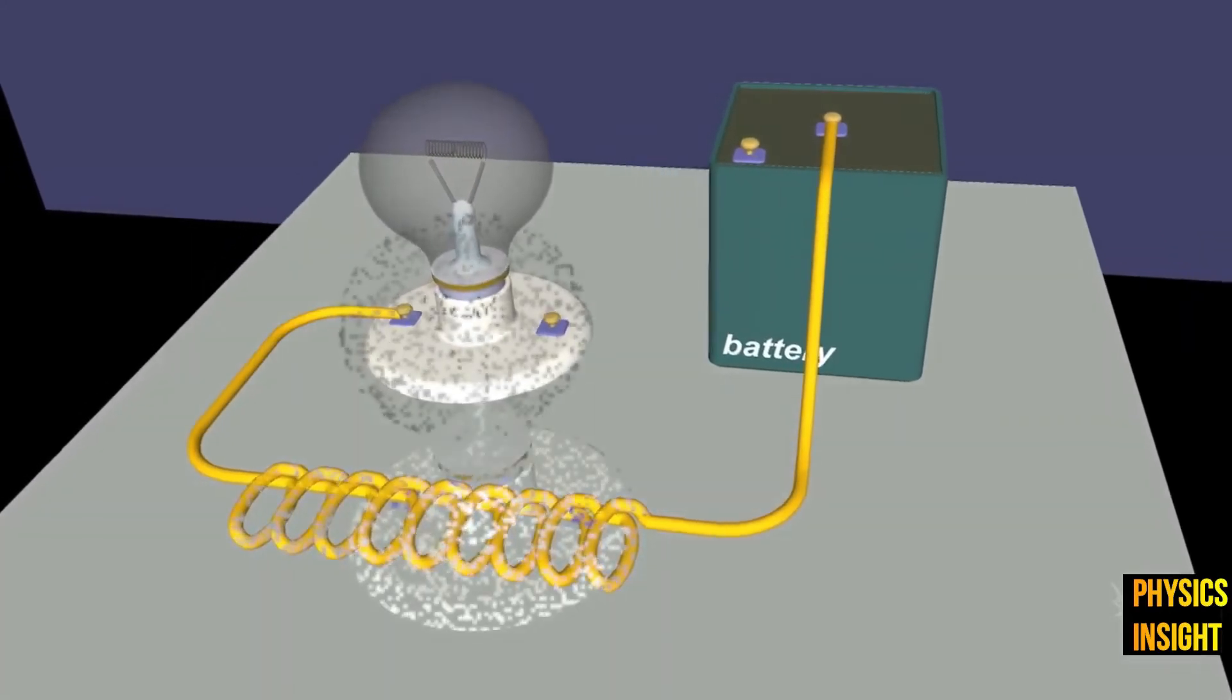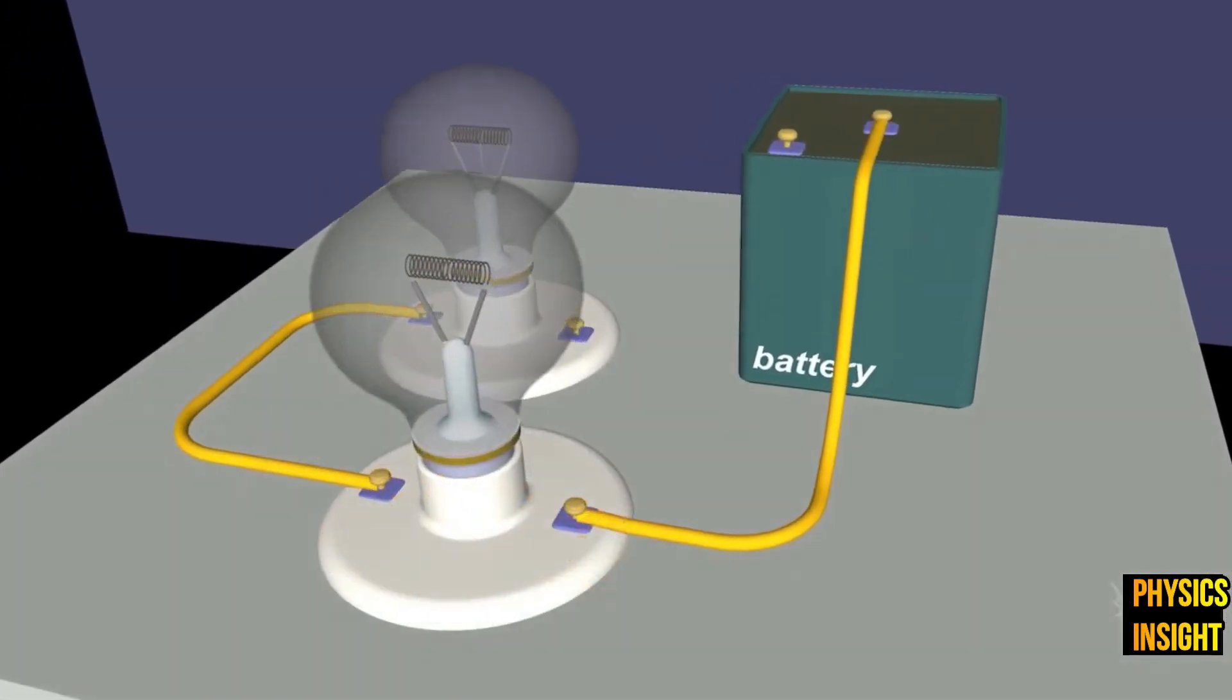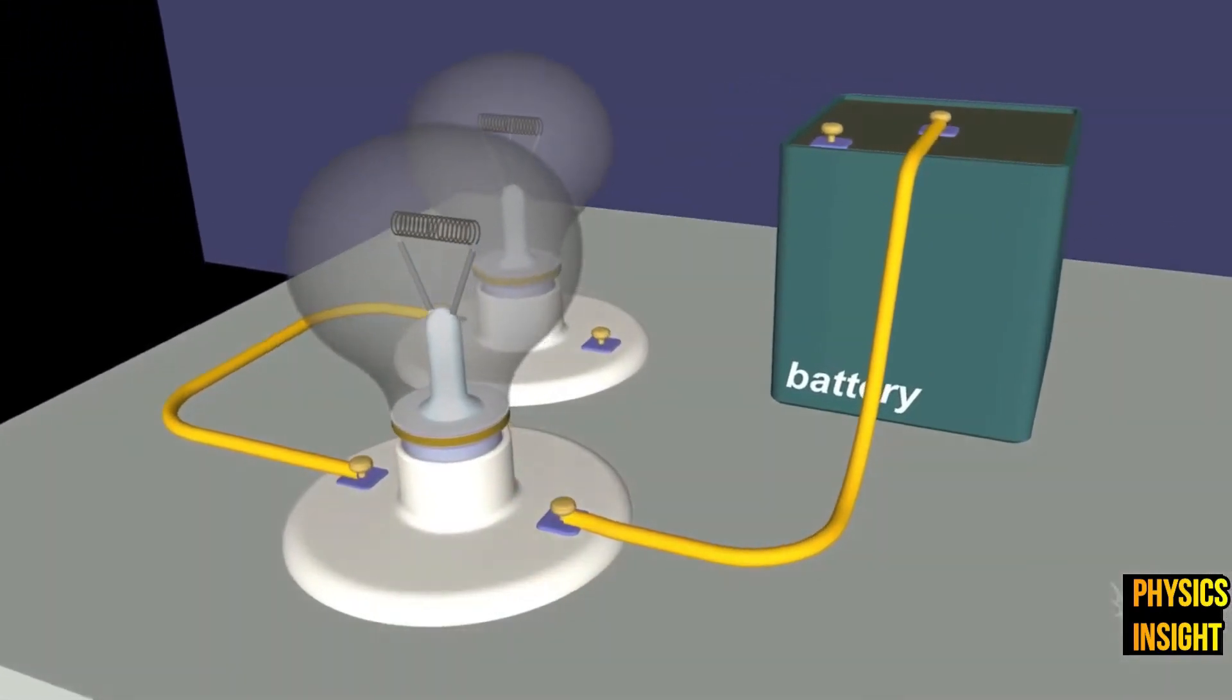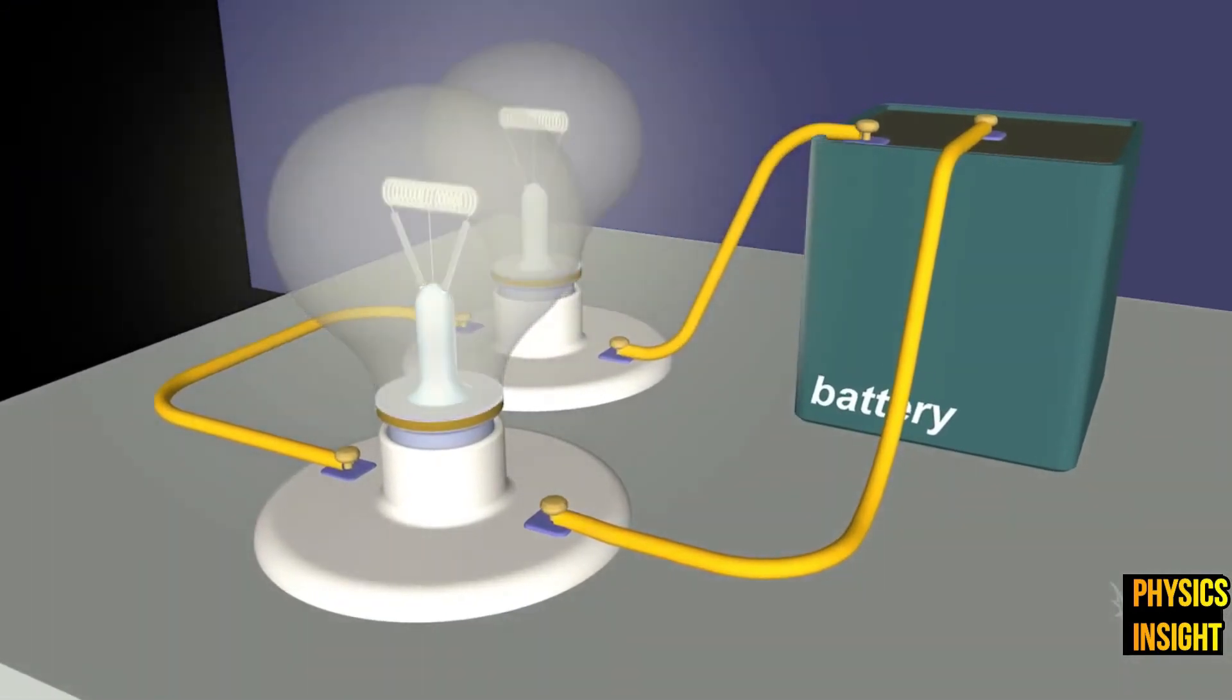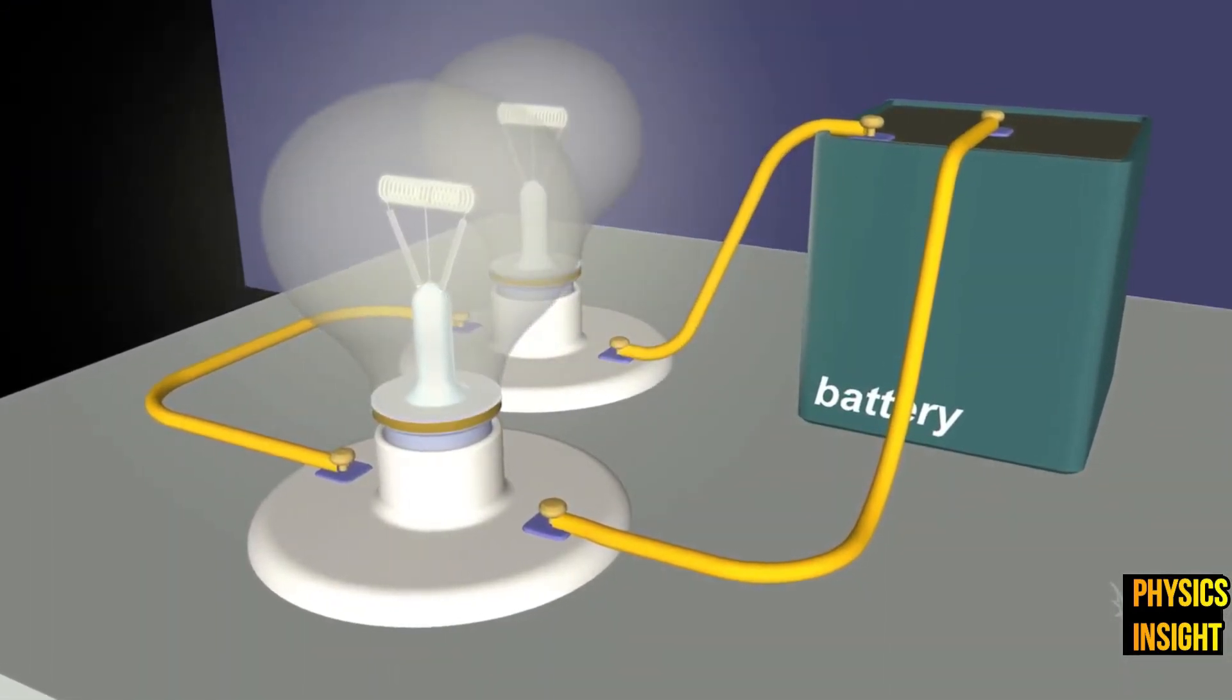When we replace the extra wire in this circuit with another light, we see similar results. The first light is still dim, and so is the second light.